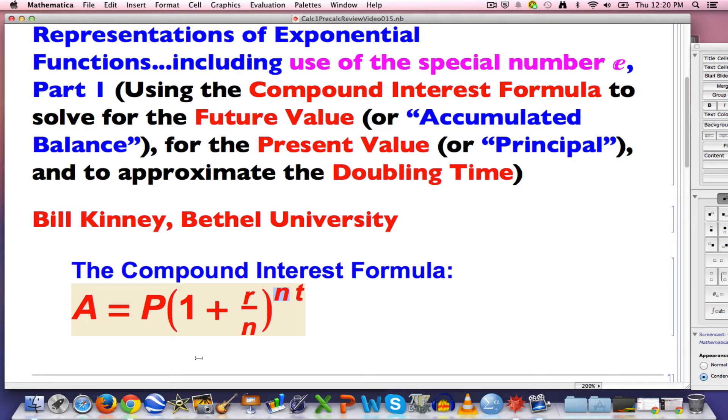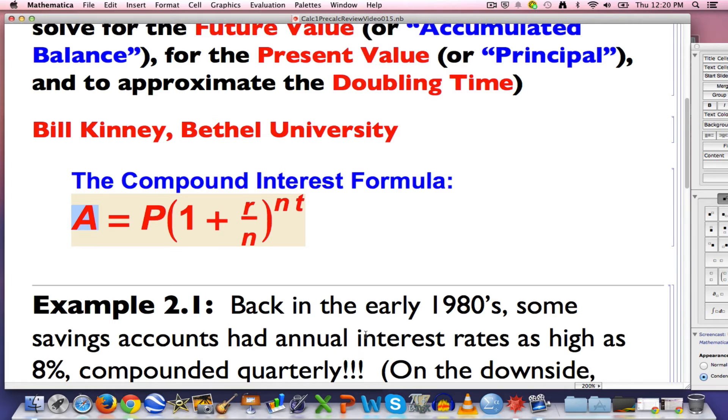Oftentimes banks' savings accounts are compounded four times a year. N is four. That means every three months, that's when they give you your interest. We're going to use the formula and find, in part A of the problem, we're going to find the value of A, the accumulated balance here. And here is the example.